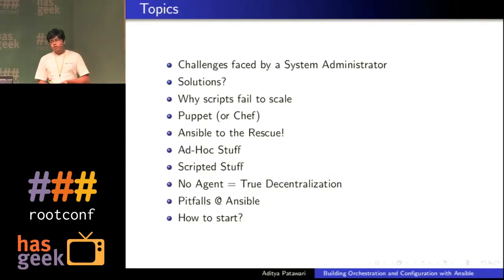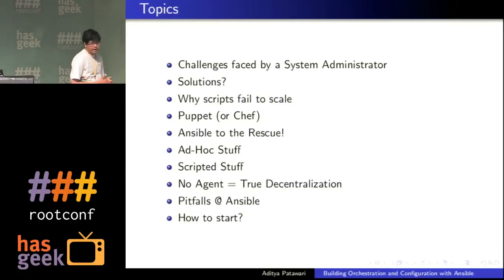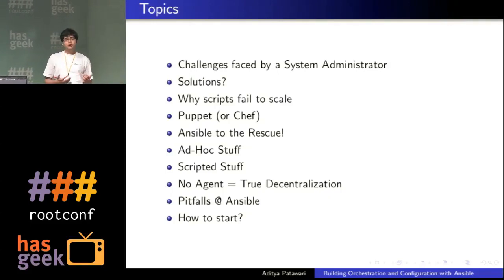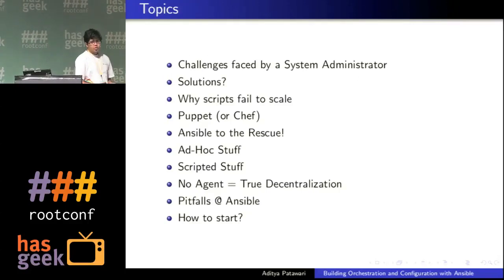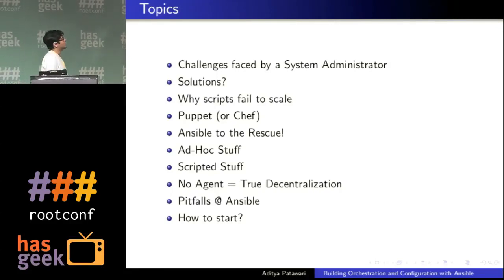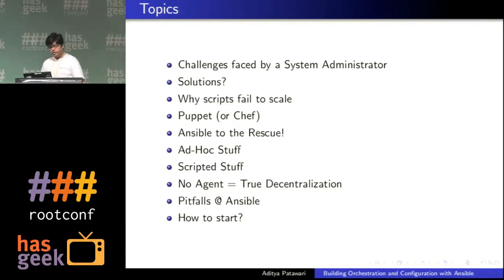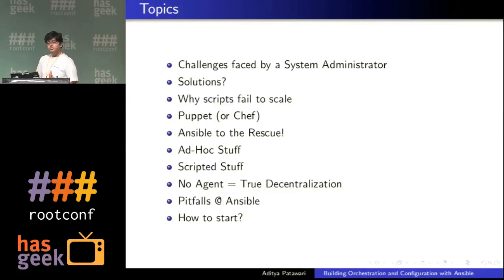In particular, I'm going to cover a few topics: the challenges which we face as system administrators and DevOps engineers, why traditional methodologies like Bash, Python, or Ruby scripts fail to scale over time, and some newer tools like Puppet or Chef. Then I'm going to move on to Ansible and why Ansible is better, including how to use Ansible for ad hoc and scripted tasks. We'll also talk about decentralization and the areas where Ansible actually fails.